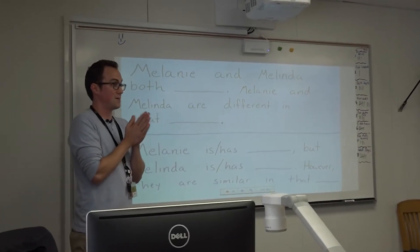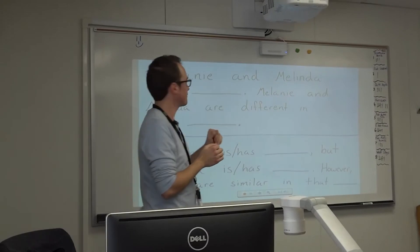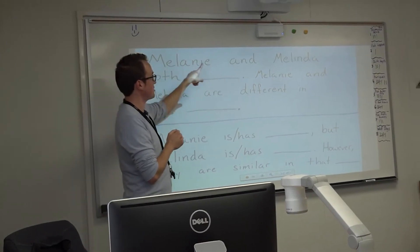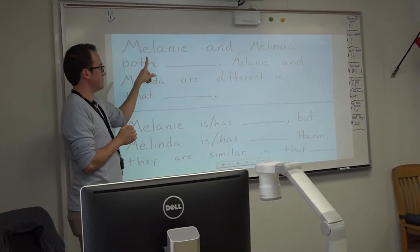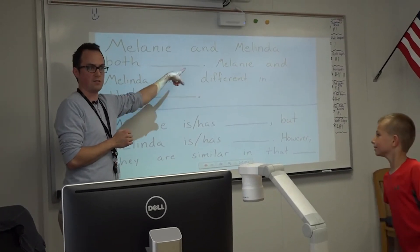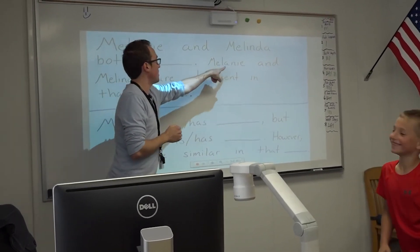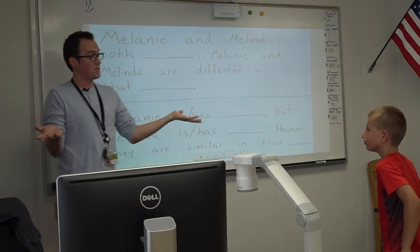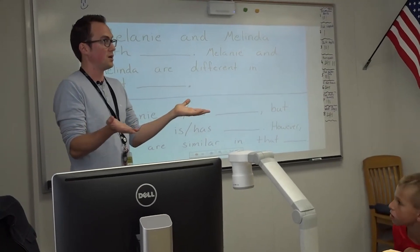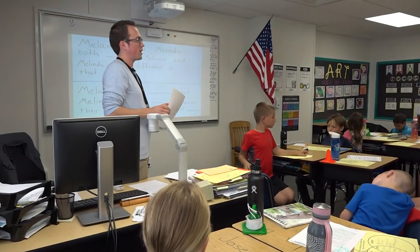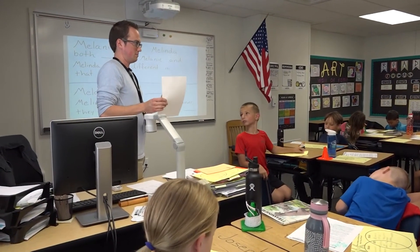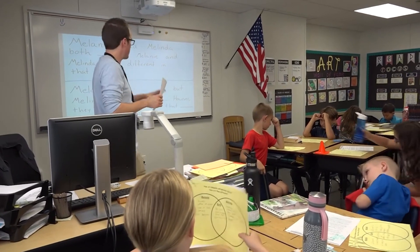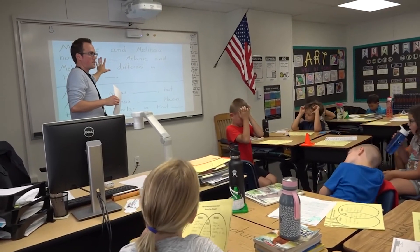Let's pretend I'm talking about two characters from another story we're reading: Aunt Spiker and Aunt Sponge from James and the Giant Peach. I could say Aunt Sponge and Aunt Spiker both are mean and selfish to James. Aunt Sponge and Aunt Spiker are different in that Aunt Sponge wants to eat the Giant Peach when she sees it, but Aunt Spiker wants to show it to people for money. What are you going to tell your 3-2-1 partners?